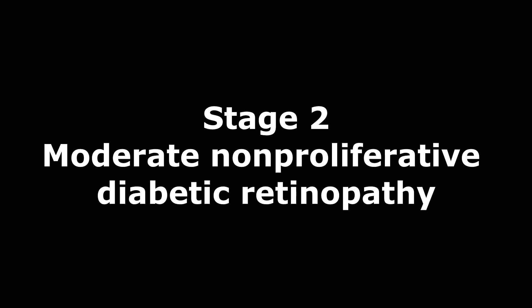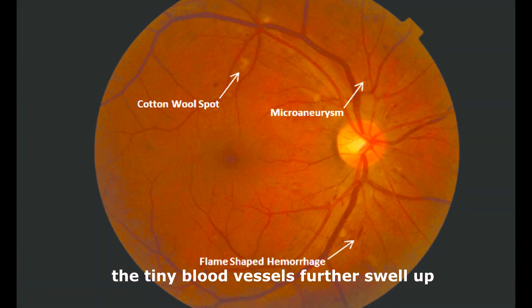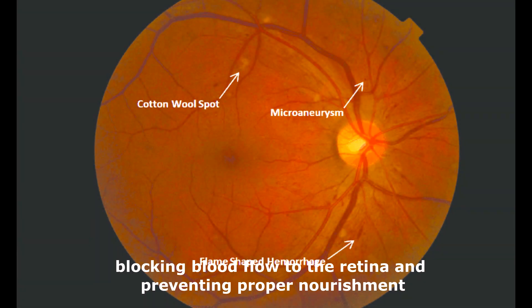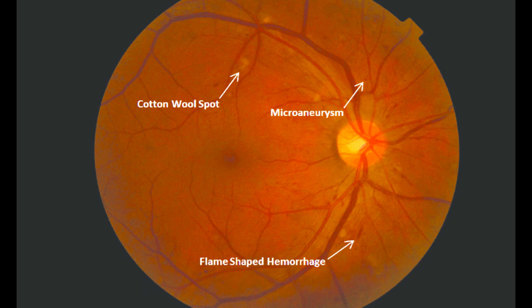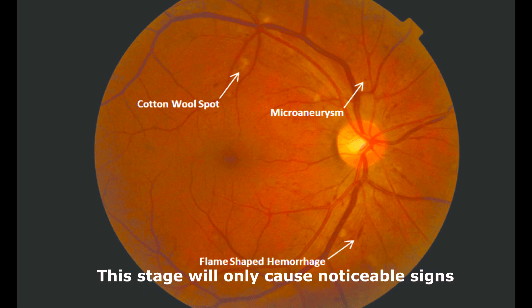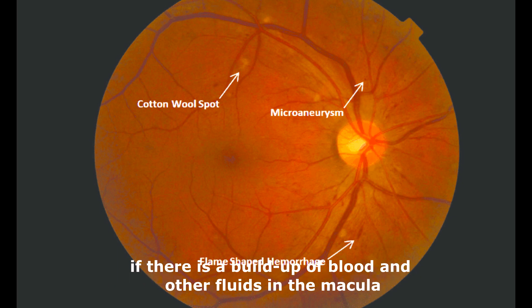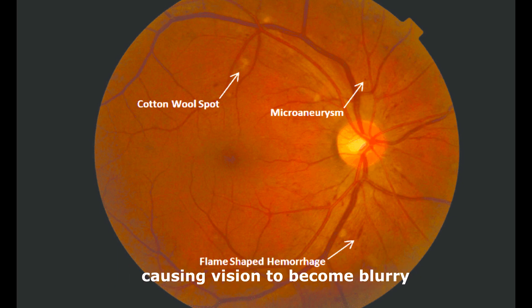Stage 2: moderate non-proliferative diabetic retinopathy. At this stage, the tiny blood vessels further swell up, blocking blood flow to the retina and preventing proper nourishment. This stage will only cause noticeable signs if there is a buildup of blood and other fluids in the macula, causing vision to become blurry.